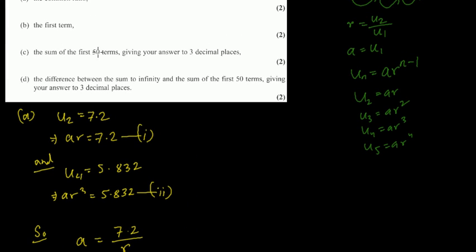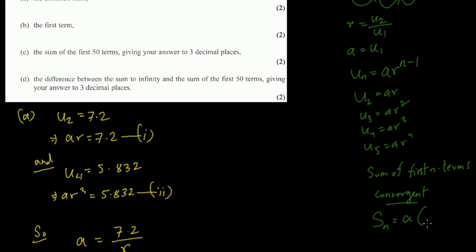For the sum of the first 50 terms, there are two formulas: one for r greater than 1 (divergent) and one for r less than 1 (convergent). Our r = 0.9 is less than 1, so we use the convergent formula: S_n = a(1 - r^n) / (1 - r). The convergent condition requires r to be between minus 1 and 1.